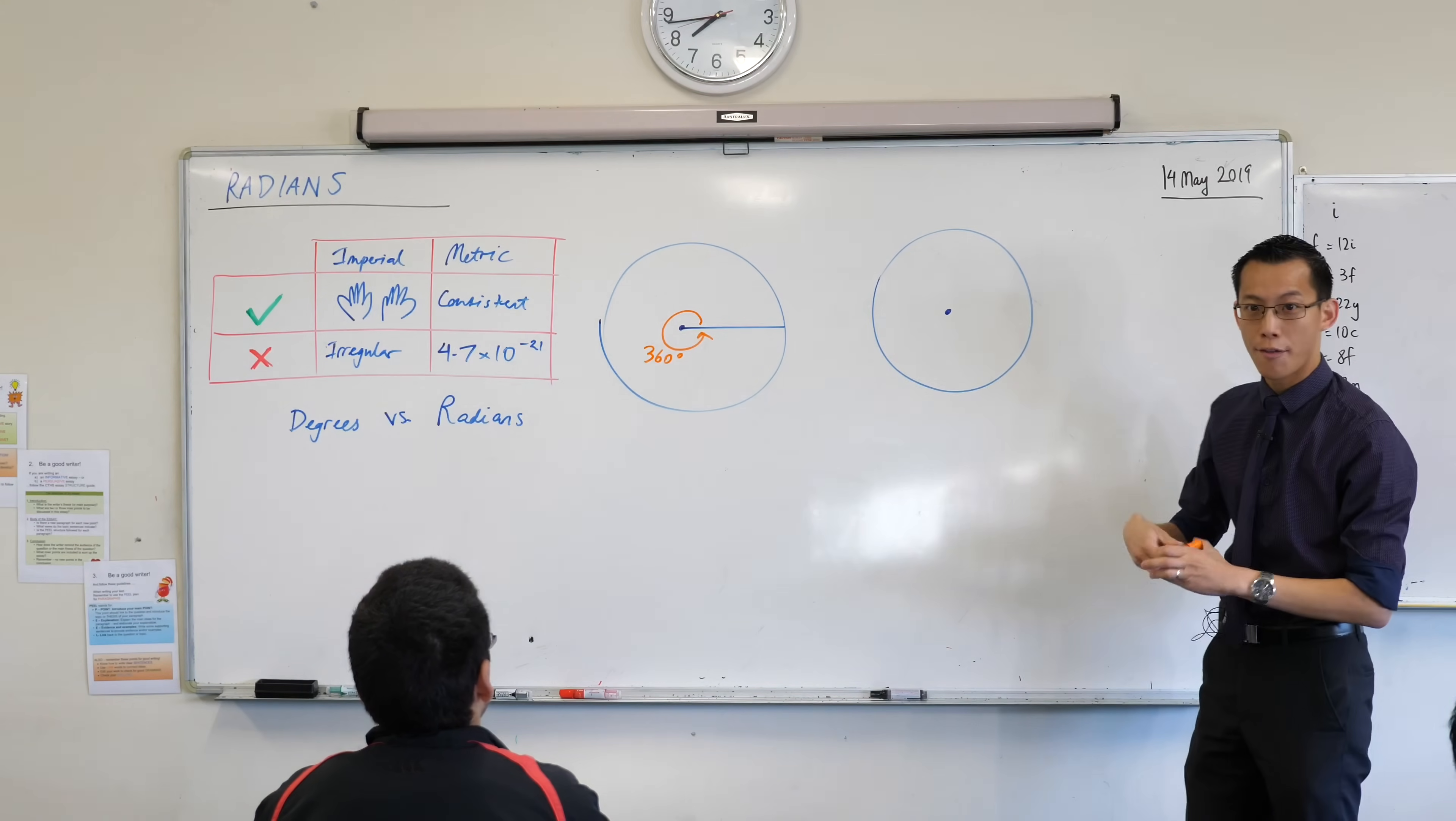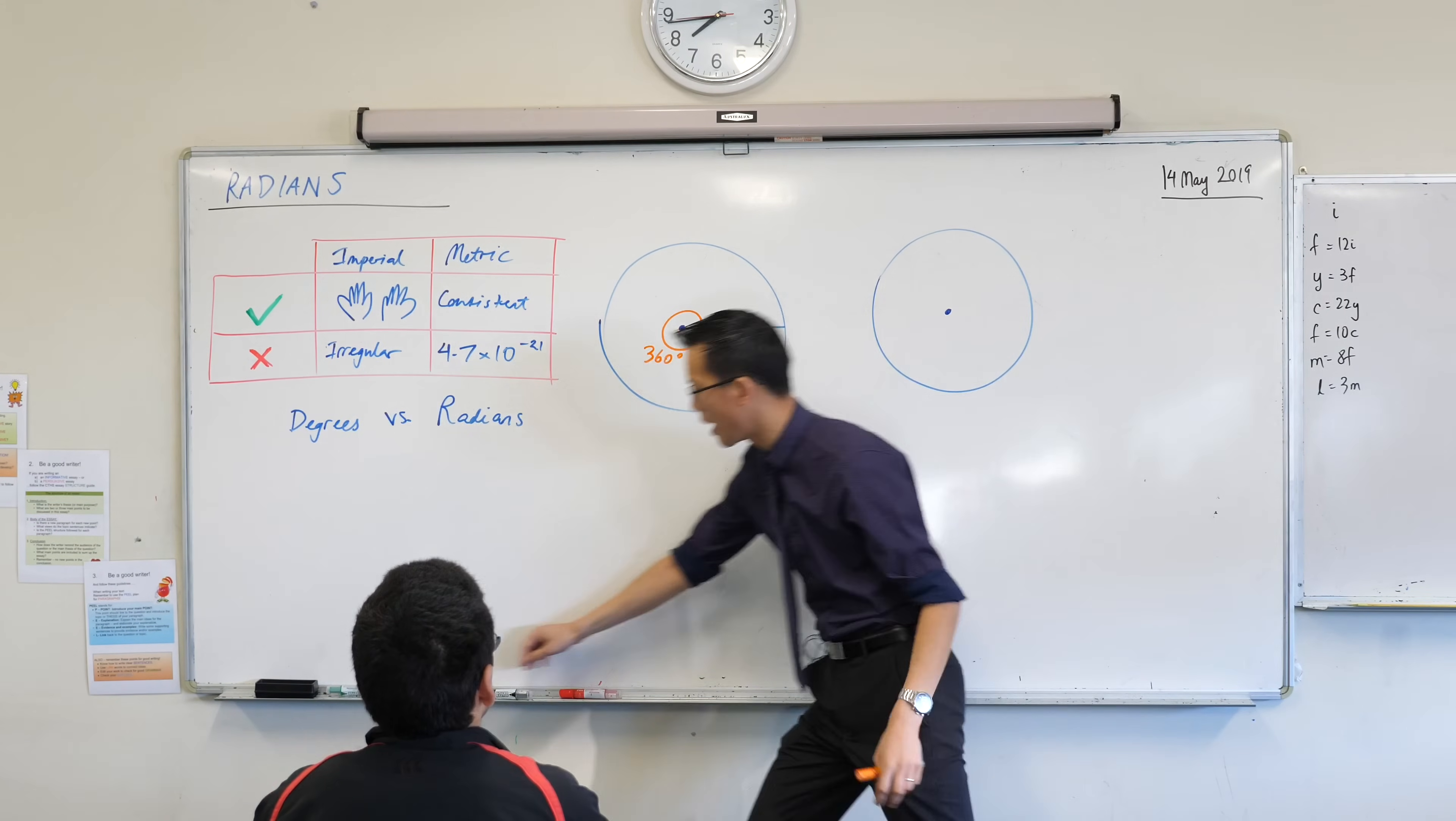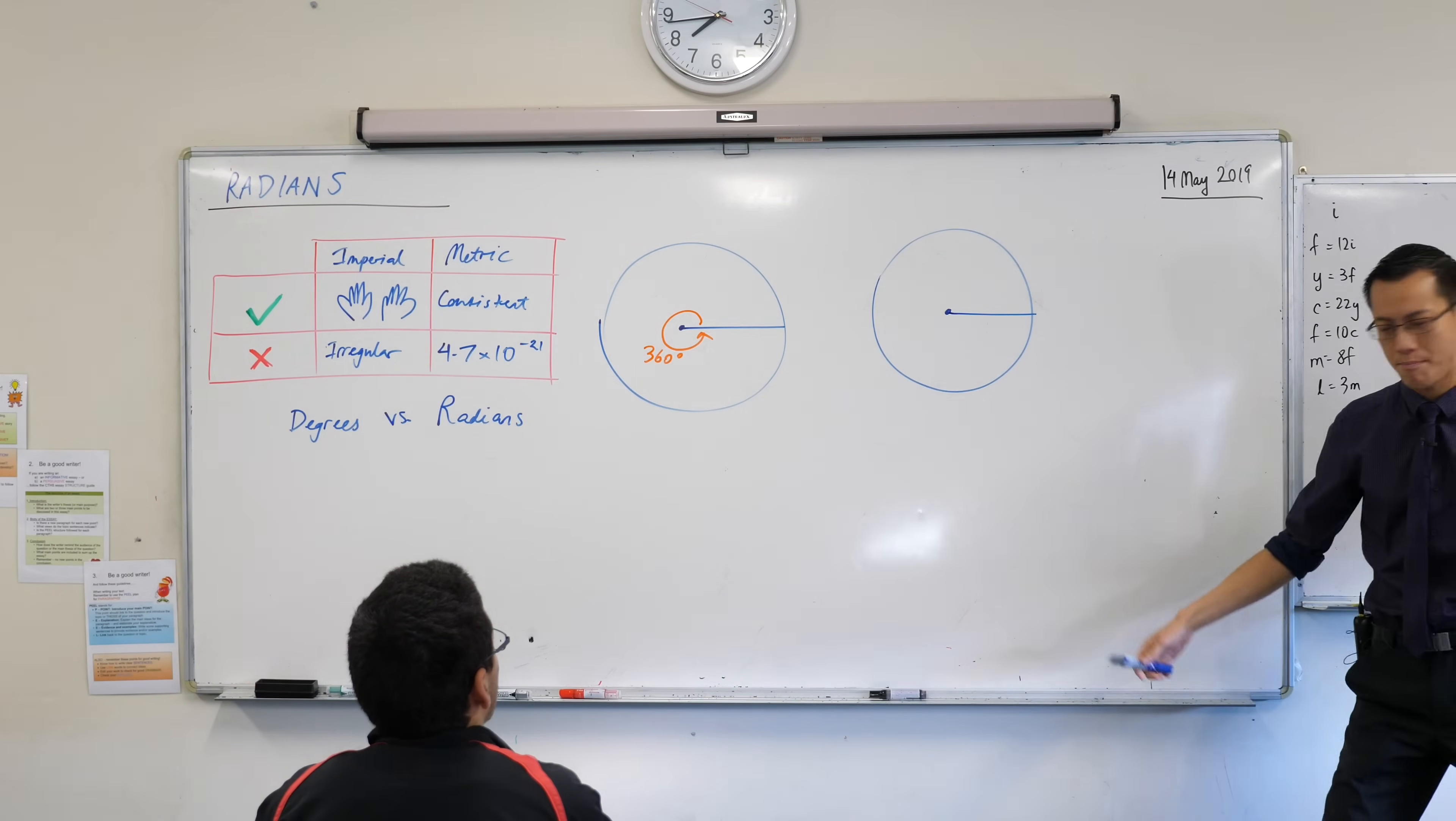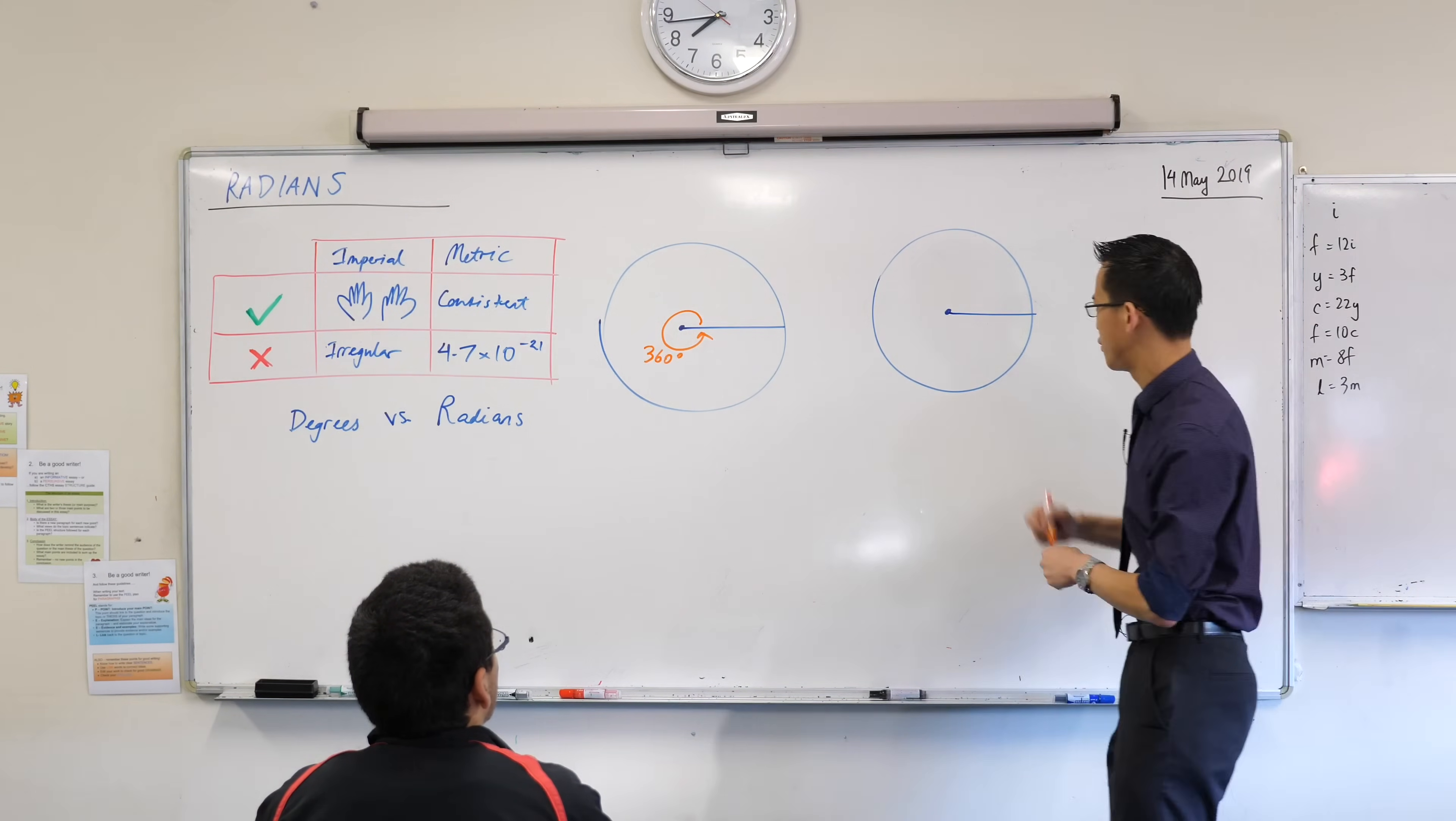So if we had a full revolution in a new kind of way of measuring angles, how could we measure it in a way that might have different advantages?